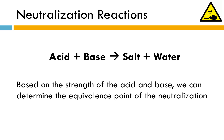If you have a strong acid and a strong base neutralizing each other, you get a neutral equivalence point. Strong acid plus weak base gives an acidic equivalence point. Weak acid plus strong base gives a basic equivalence point. And we don't ever really titrate weak acid plus weak base.